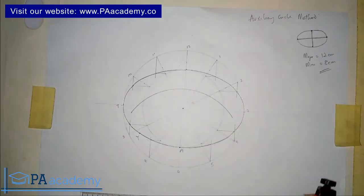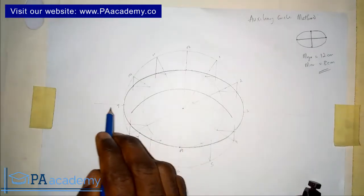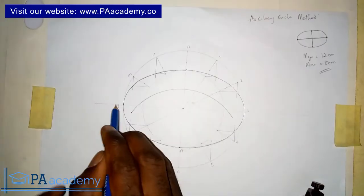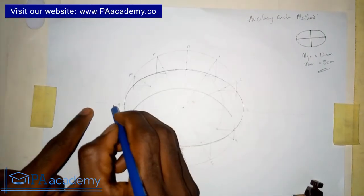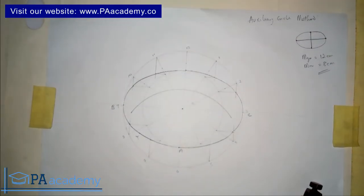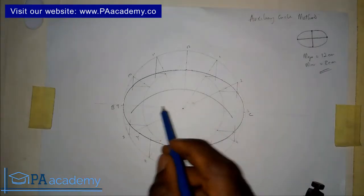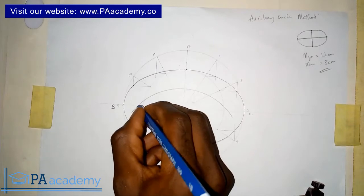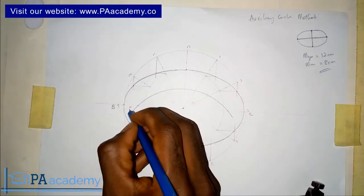This arc will touch line BC — the line along the major axis. You can see it touches the line here and also here. These two points where the arc touches the line are called the focal points. Let's call them F1 and F2.